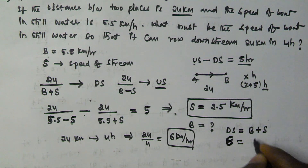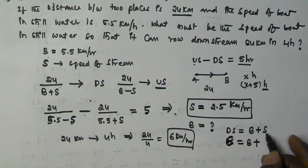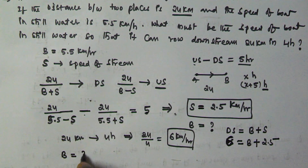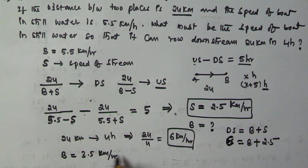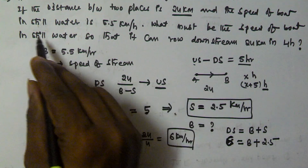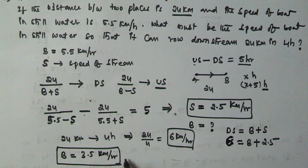So 6 kilometers per hour equals b plus 2.5. From this, b equals 3.5 kilometers per hour. So the speed of the boat in still water should be 3.5 kilometers per hour so that it can go downstream 24 kilometers in 4 hours.